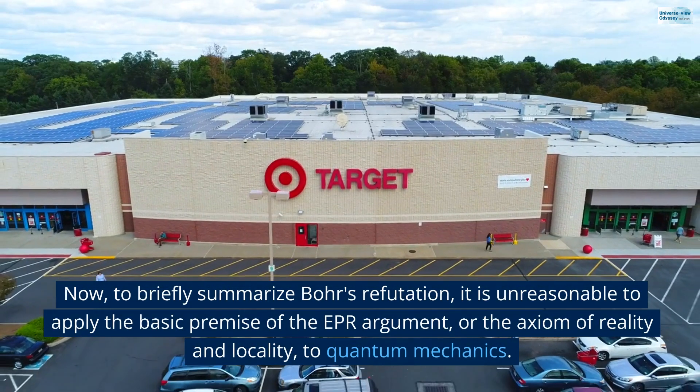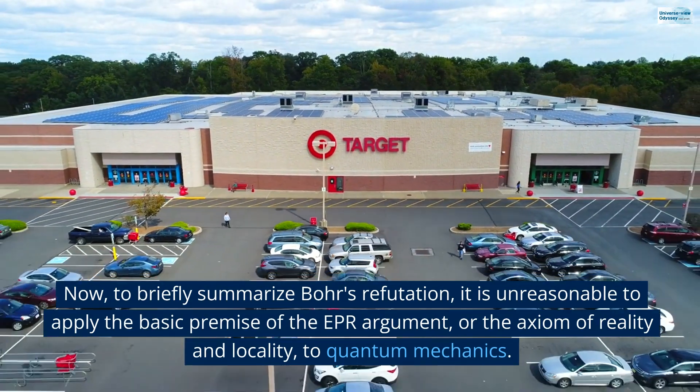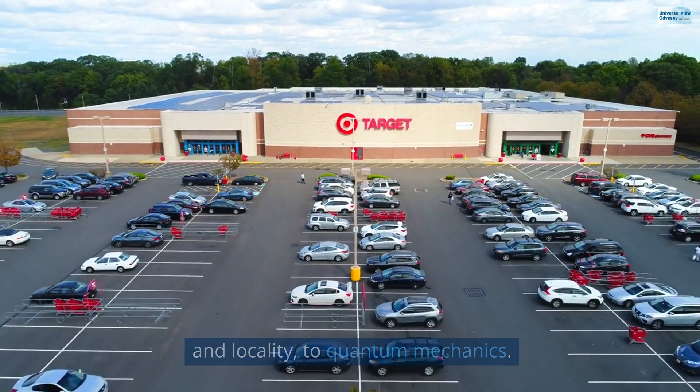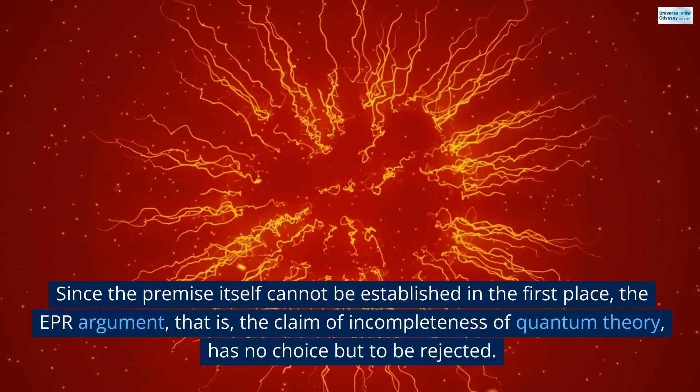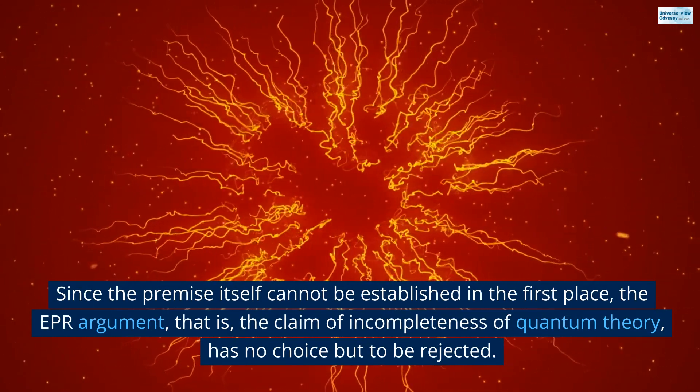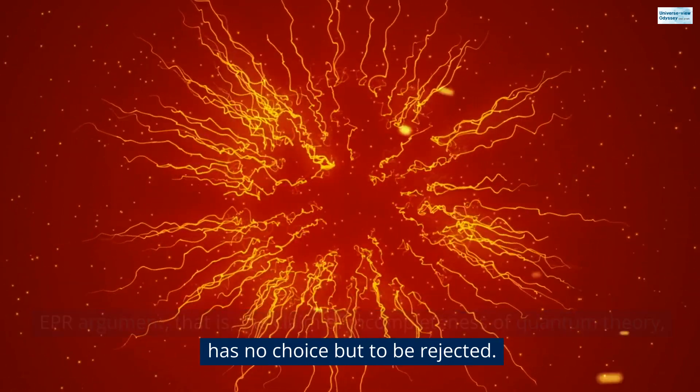Now, to briefly summarize Bohr's refutation, it is unreasonable to apply the basic premise of the EPR argument, or the axiom of reality and locality, to quantum mechanics. Since the premise itself cannot be established in the first place, the EPR argument, that is, the claim of incompleteness of quantum theory, has no choice but to be rejected.